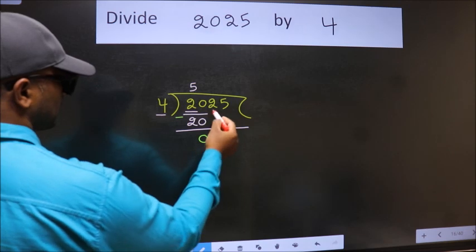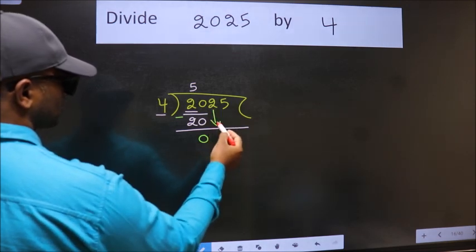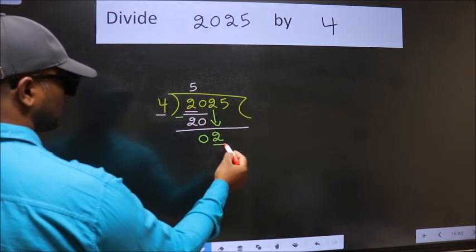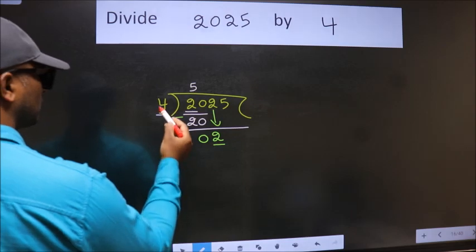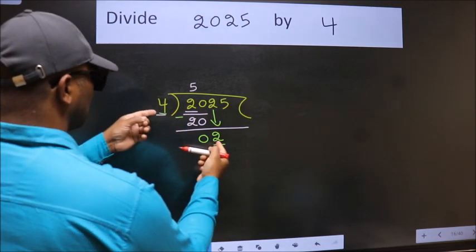After this bring down the beside number. So 2 down. Now here we have 2, here 4. 2 is smaller than 4.